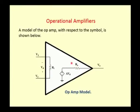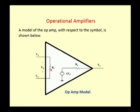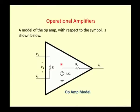For the 741 op-amp, Ri is around 1 mega ohm, R0 is around 50 ohms, and A is approximately 1 lakh (100,000). For an ideal op-amp, Ri is infinity, A is infinity, and output resistance R0 is zero.